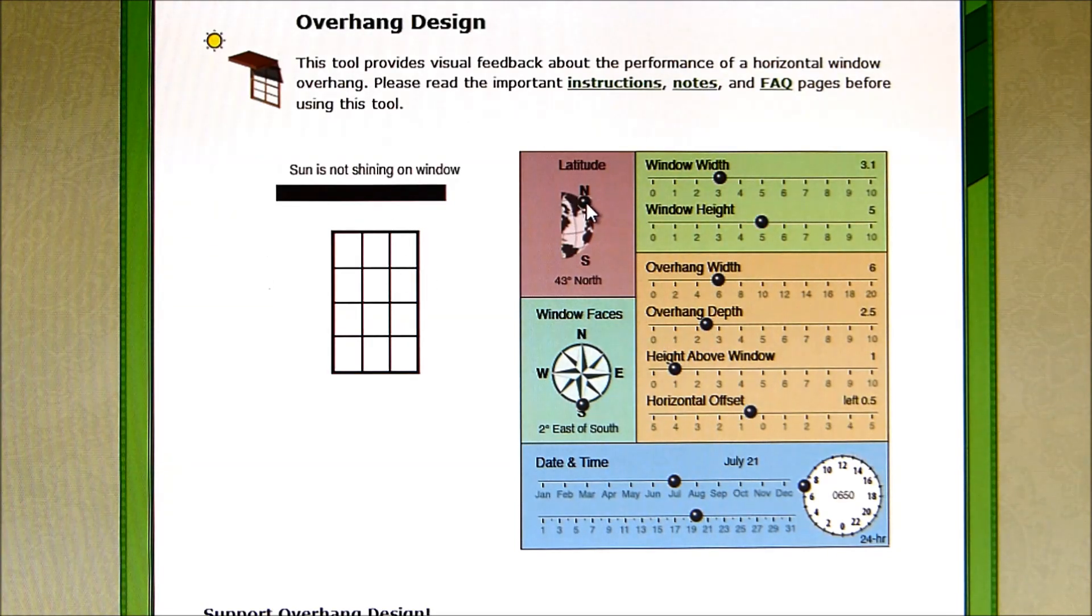I have changed the latitude over here. You can move this little slider to whatever latitude your city is. Here in Michigan we happen to be about 43 degrees, 42 to 43 degrees depending on where you are.